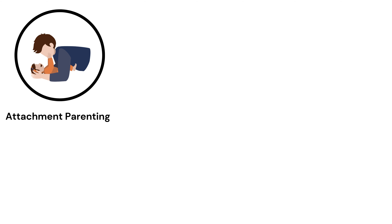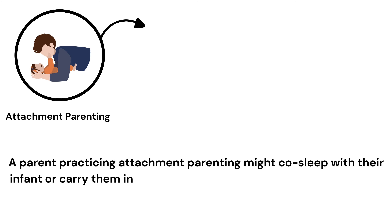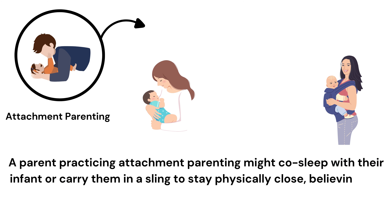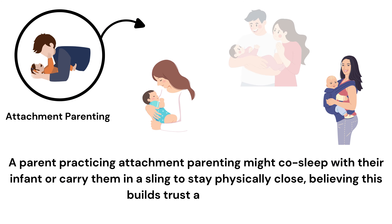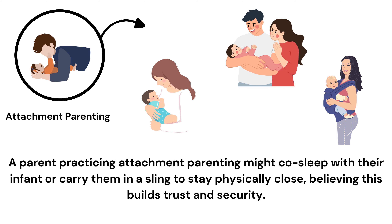Example: A parent practicing attachment parenting might co-sleep with their infant or carry them in a sling to stay physically close, believing this builds trust and security.